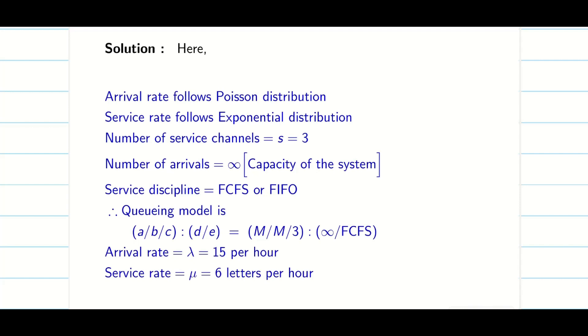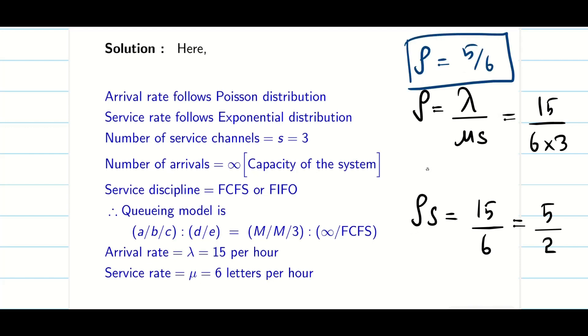So let us find rho. Rho is lambda by mu s, because it is a multi-server problem. So it is going to be 15 divided by 6 times 3. Rho s is going to be simply 15 by 6, which can be simplified into 5 by 2. Similarly rho can be simplified into 5 by 6. So rho is 5 by 6 and rho s is going to be 5 by 2. Getting this data, we are going to solve the problem.